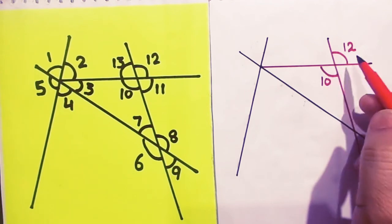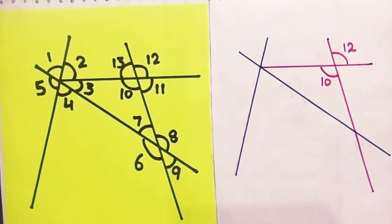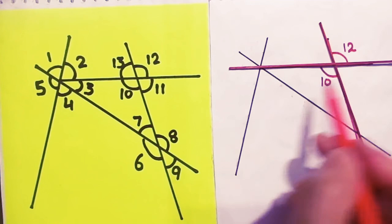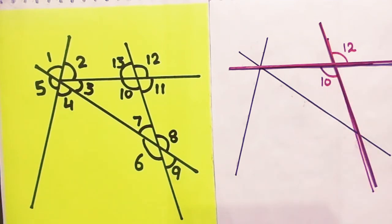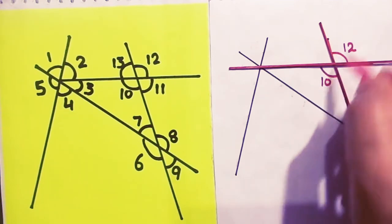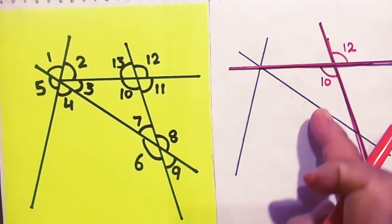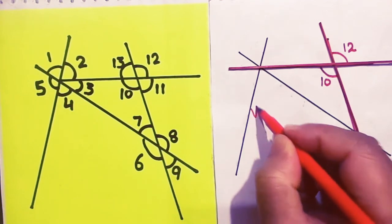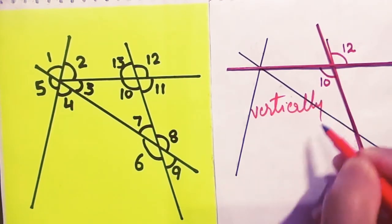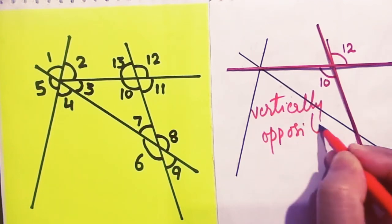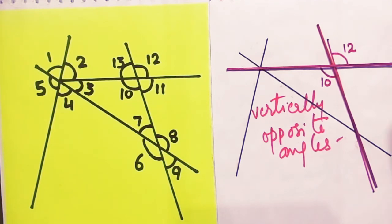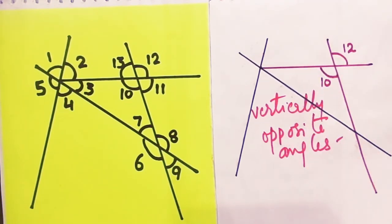You are being asked about angles 10 and 12. These are the angles formed when two lines intersect at a point. They are vertically opposite angles.